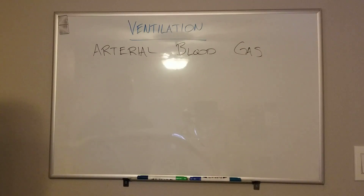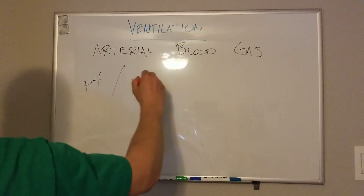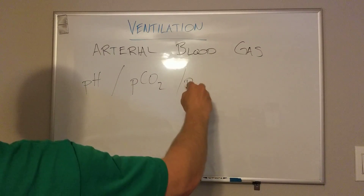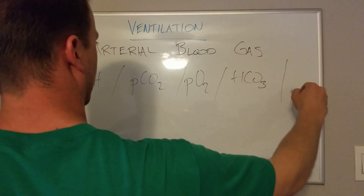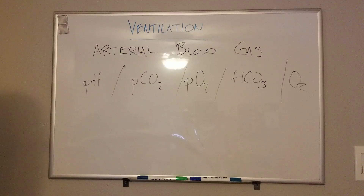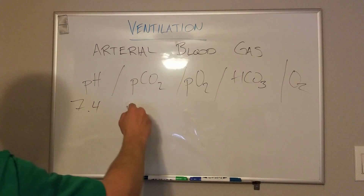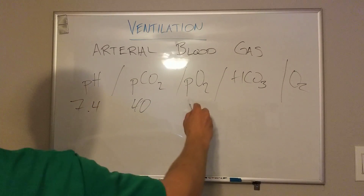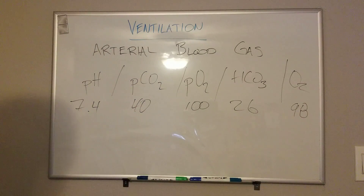The five most basic numbers that you want — that when people report ABG numbers — are pH, partial pressure of CO2, partial pressure of oxygen, the bicarb, and then their O2 sat. When you listen to ICU rounds, this will be run off very quickly and they're not going to say 'and the bicarb was 24.' They're just going to say these numbers. So the patient's morning ABG was 7.4, 40, 100, 26, and 98. You have to know this order — when they say 98, they don't mean the CO2 is 98. Anyone working in the ICU will be very fluent with this.